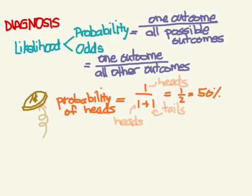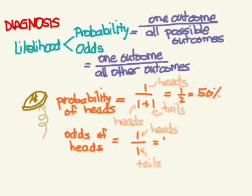The probability of getting heads is 50%. Now, what about the odds of getting heads? There's only one way of getting heads, and the only other option is tails. So 1 over 1 equals 1, or we can say the odds is 1 to 1.